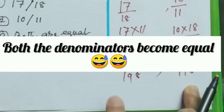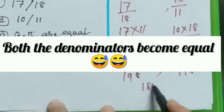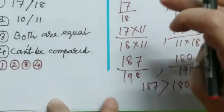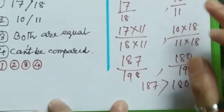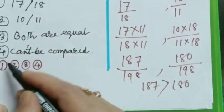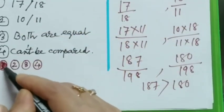You see, both the denominators become equal. As 187 is greater than 180, that means this fraction is greater than this one. That means 17 by 18 is greater. That means our correct option is number 1.